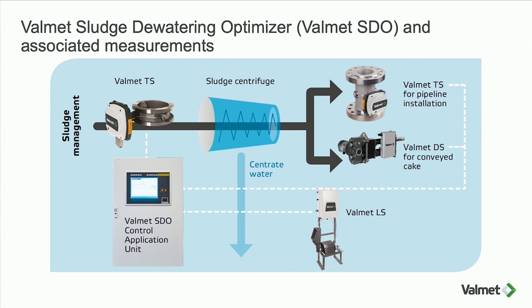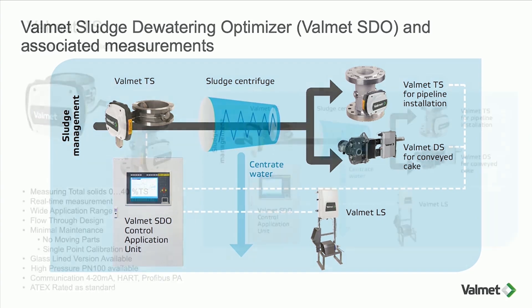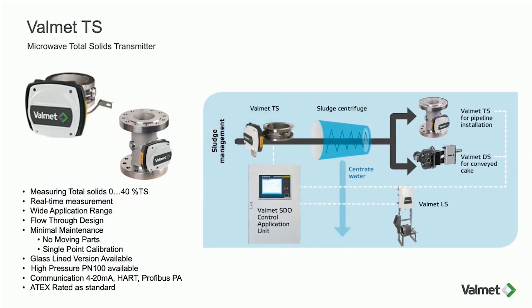Looking at the measurement technology itself: this is a product called Valmet TS, designed to measure right through the wastewater process from primary thickening through to centrifuge. It has a wide measurement range — zero to forty percent total solids. It's normally installed on the inlet of the centrifuge, but because it can measure quite high solids, it can also measure in the dry cake area if you are pumping the dry cake through a pipe.